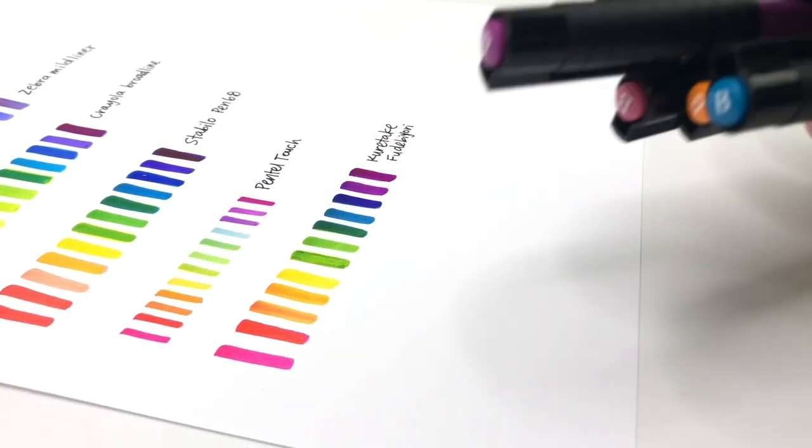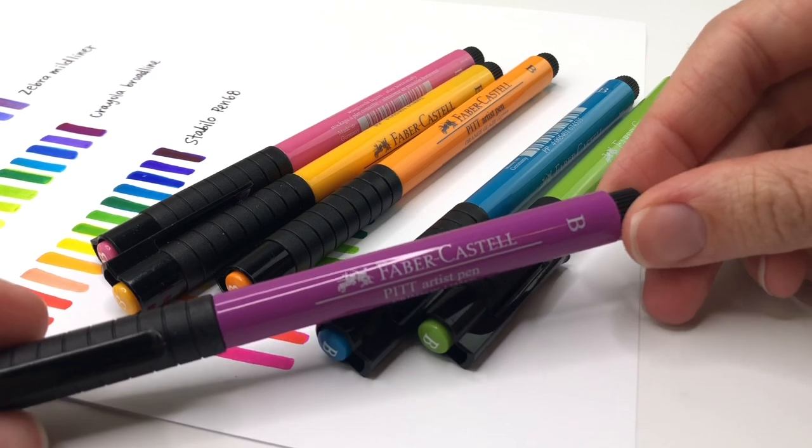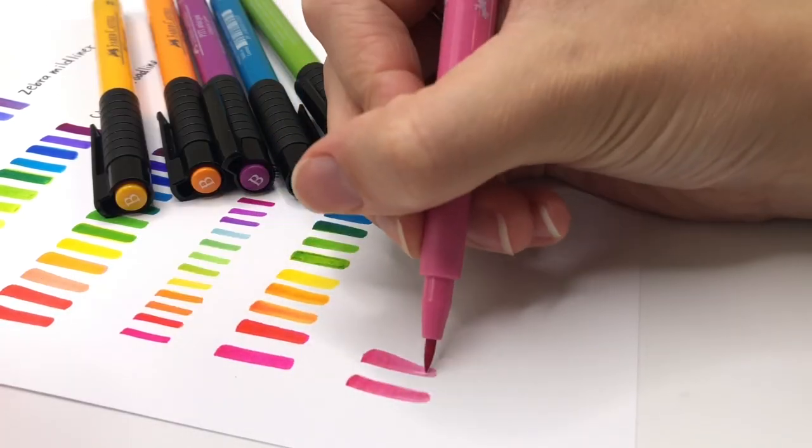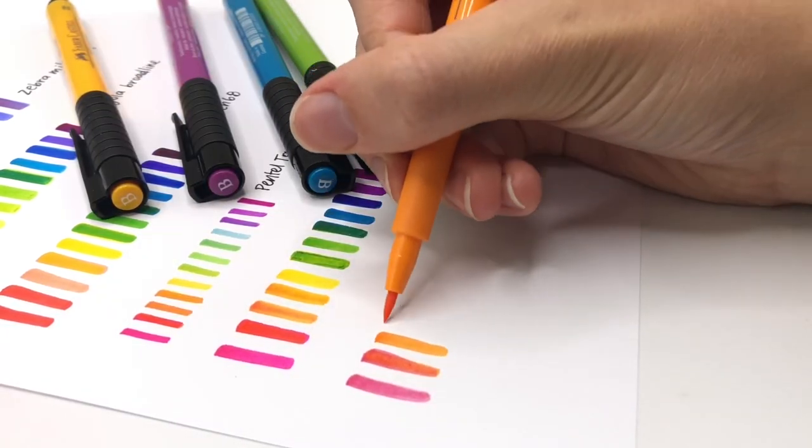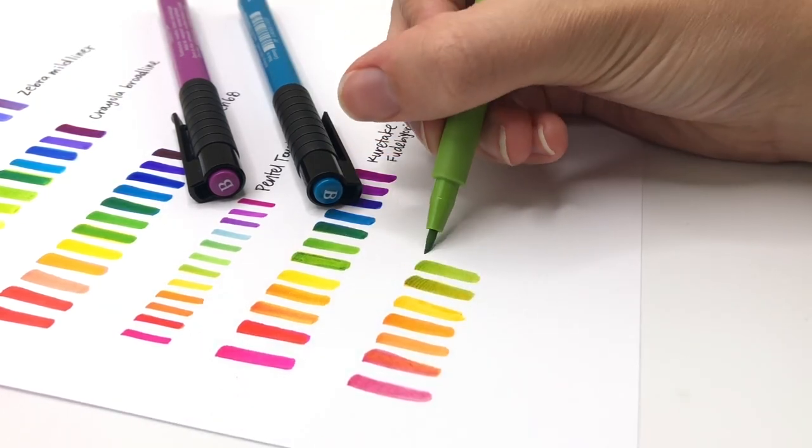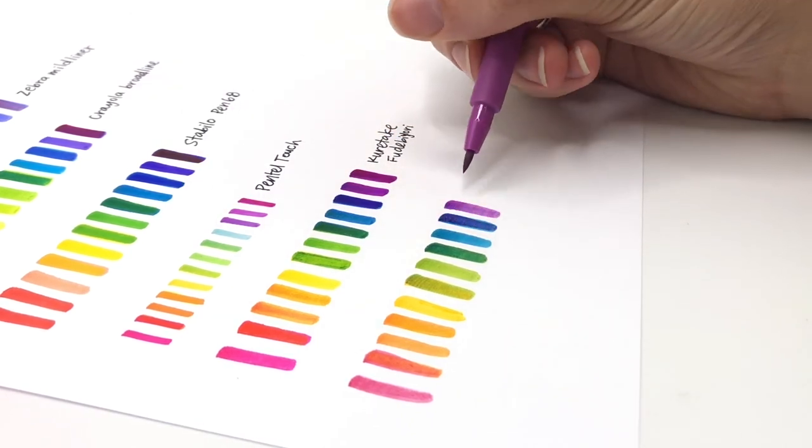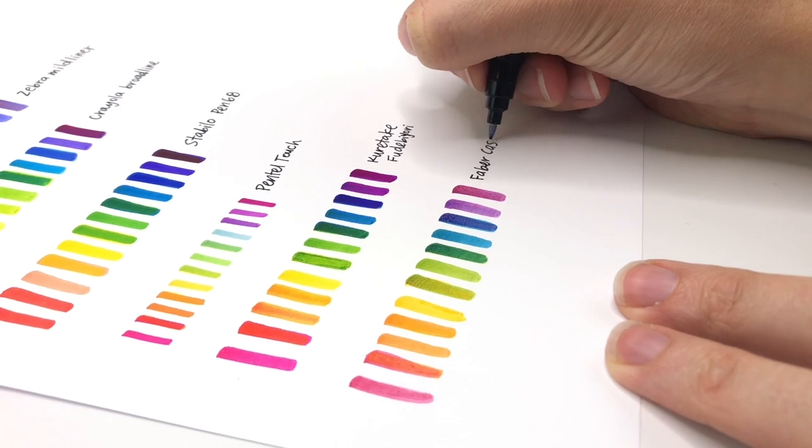And next is Faber-Castell. These pens I haven't used in a while. And so they seemed like they were kind of dry, like they just needed to be used a little bit. And these ones are not water-based. They're waterproof, so I normally have a harder time blending with them. But this actually worked. Besides the yellow, the rest of them actually look really cool.